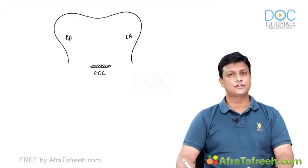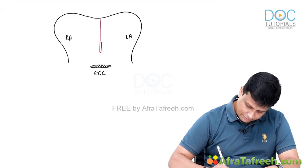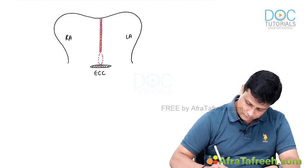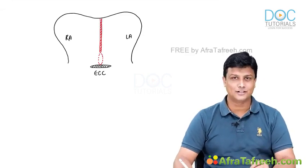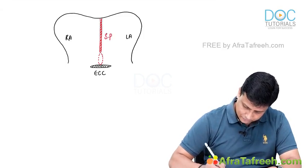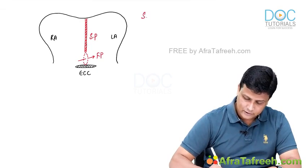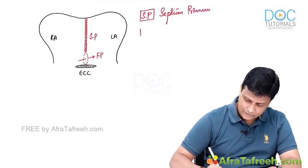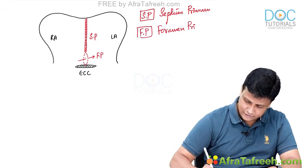In between the right atrium and the left atrium, first of all, there will be formation of a septum. That septum is descending down, but before merging with the endocardial cushion, there will be a foramen present here. This septum is actually the septum primum, and the foramen here will be the foramen primum — of course the first one to be formed. SP stands for septum primum and FP stands for foramen primum.